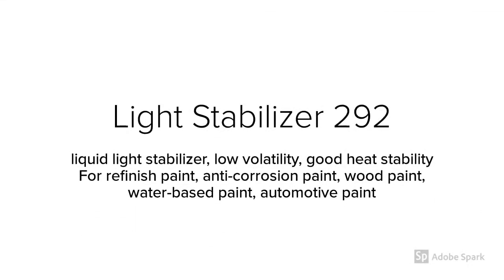Light Stabilizer 292 is a liquid light stabilizer with low volatility and good heat stability. It is mainly used for refinish paint, anti-corrosion paint, wood paint, water-based paint, and automotive paint.